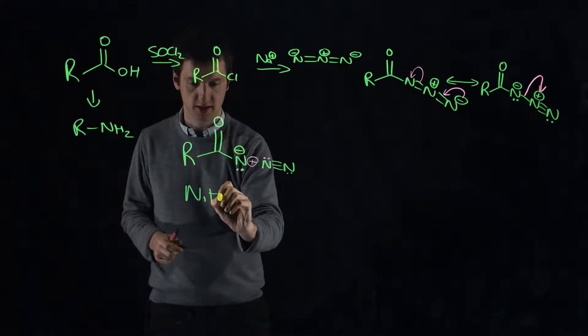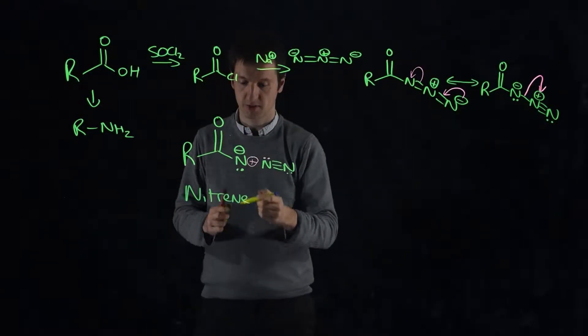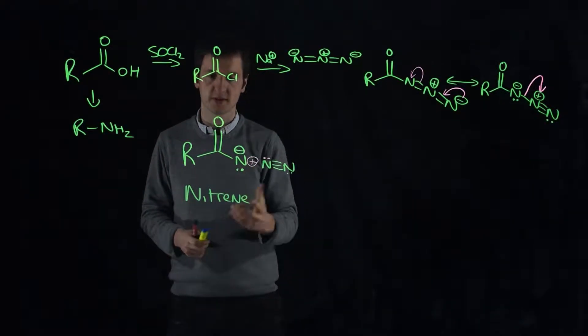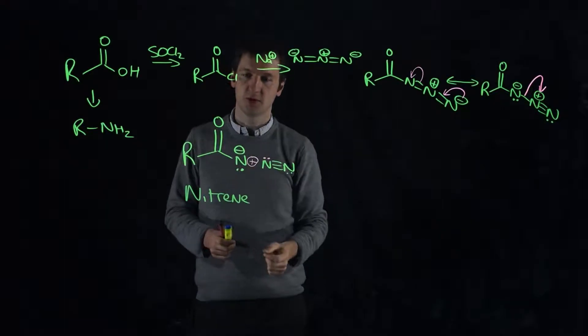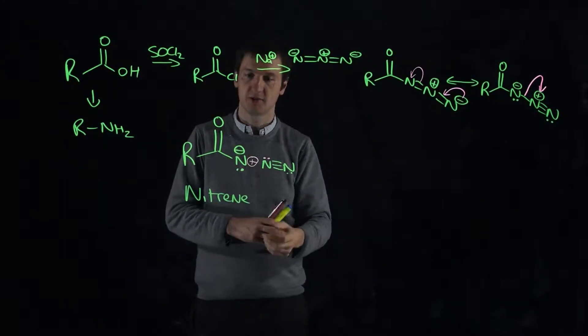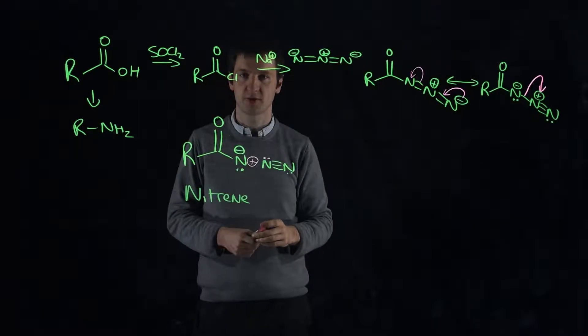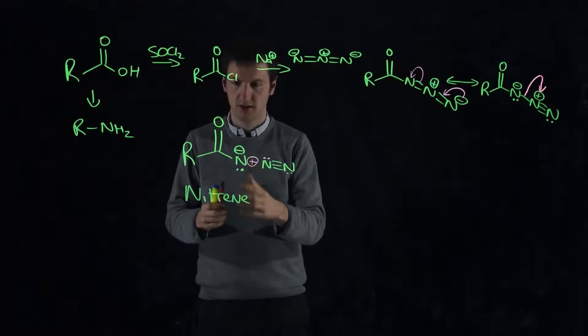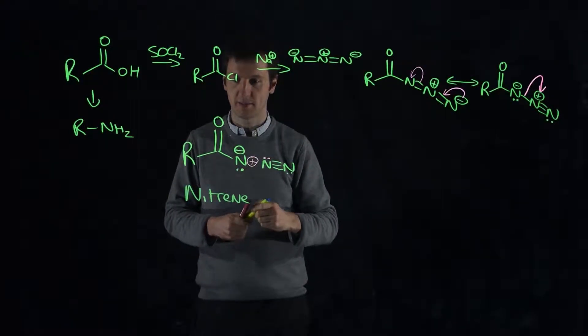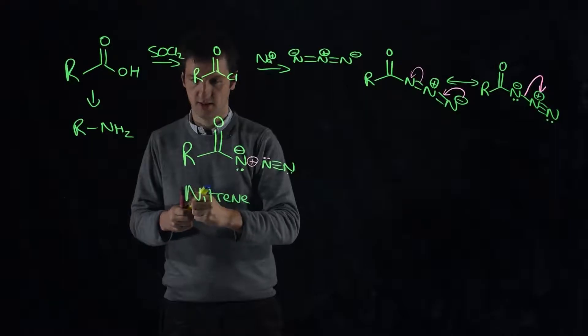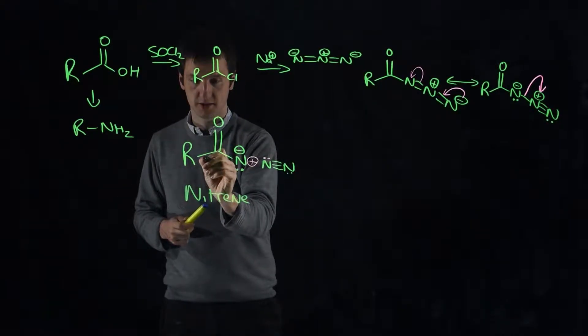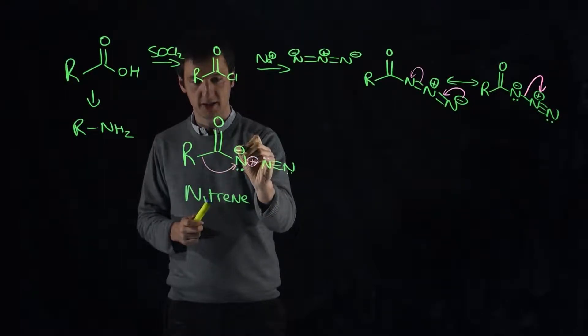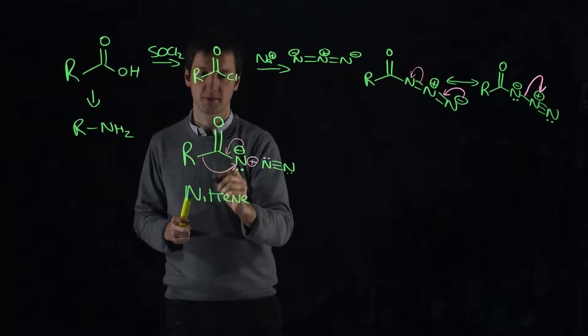A nitrene is analogous to a carbene, which we meet in the Wolff rearrangement. It's a row two element with only six electrons in its outer shell - it really wants to get eight electrons. What will happen is that this carbon-carbon bond to the OR group will shift across and make a new carbon-nitrogen bond, and this pair of electrons can account for the loss of this bond from that carbon.